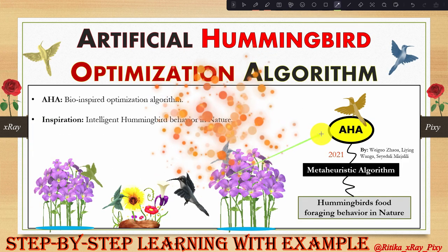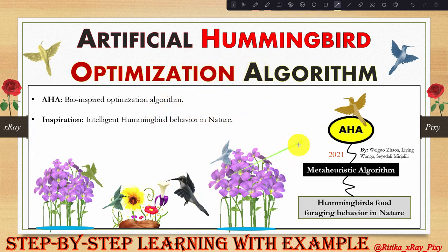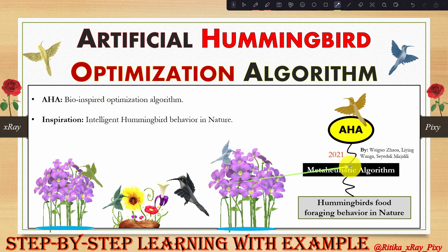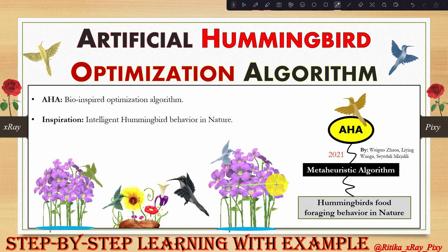The Artificial Hummingbird Algorithm was introduced in 2021. It is a bio-inspired, population-based metaheuristic algorithm inspired by the hummingbird's intelligent behavior in nature. This algorithm simulates the hummingbird's flight skills and food-foraging behavior in nature.